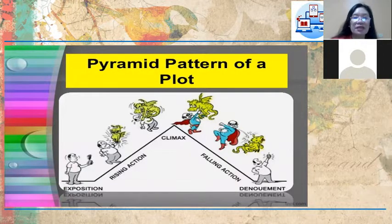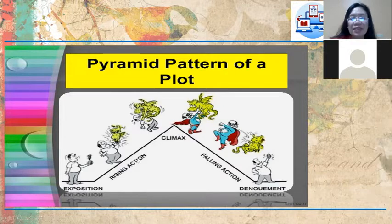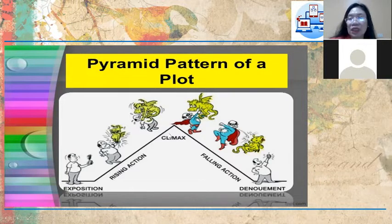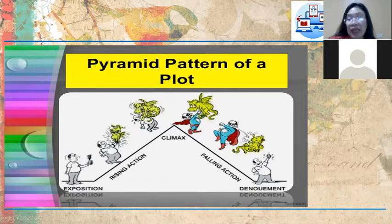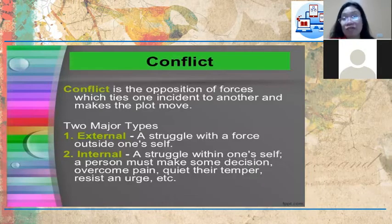As you can see from the pyramid pattern of a plot: the exposition or beginning, the rising action, then the climax or turning point, followed by the falling action, and then the denouement or the untangling of events at the end of the story.